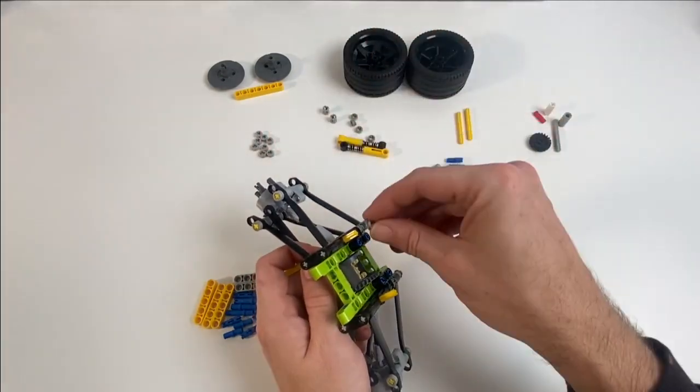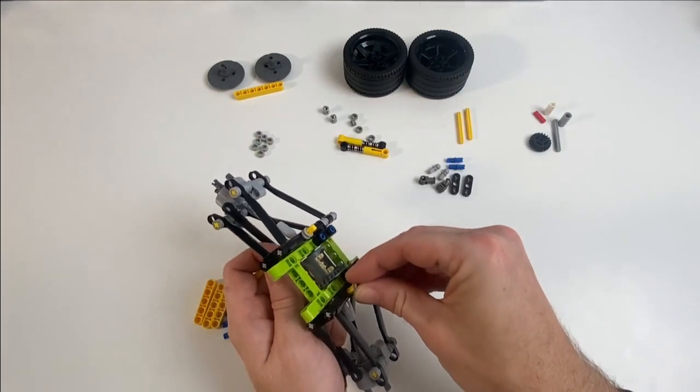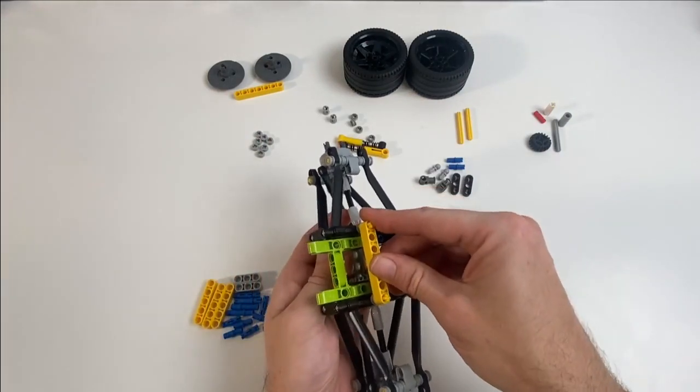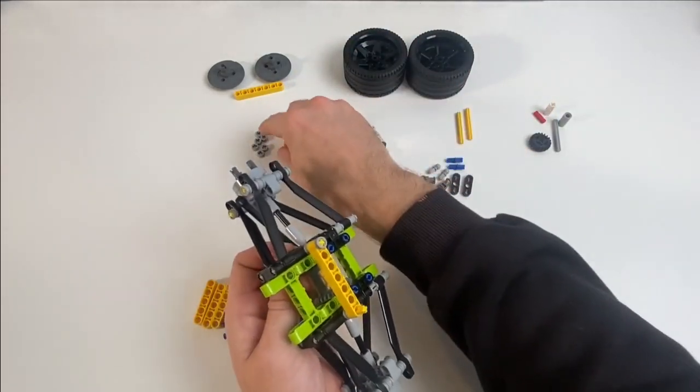So with this kind of undercarriage component here, the reason that I'm building it like this is just to provide some stability for the piece itself. If I was building this into a vehicle, I would do this differently, as I'd probably be connecting this to the chassis of the vehicle.